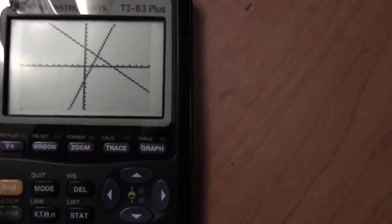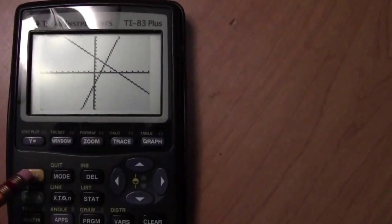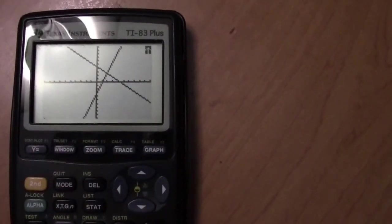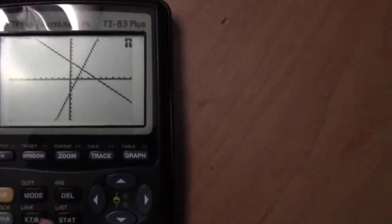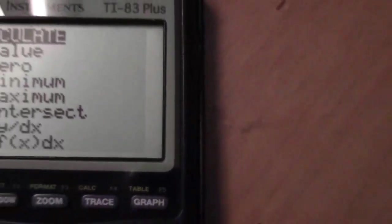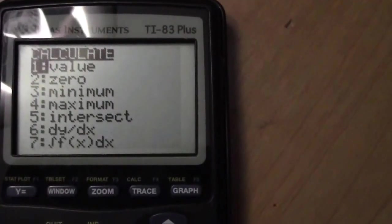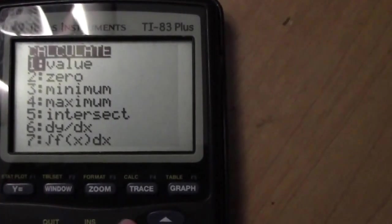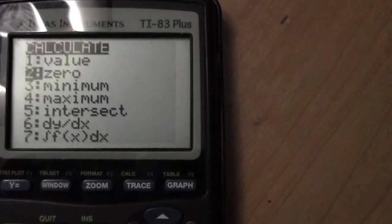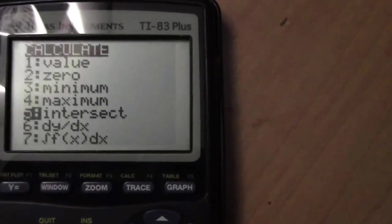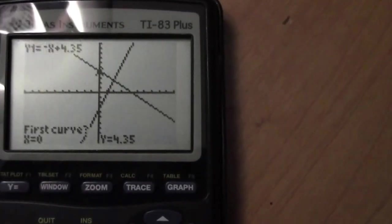So you push the second button. The second button, as you know, will give you access to the yellow words on the top of the button. So you're going to push second and trace. It'll give you a list of options as far as what you can calculate. We want to calculate the intersection. So you will go down to option 5 and hit enter.